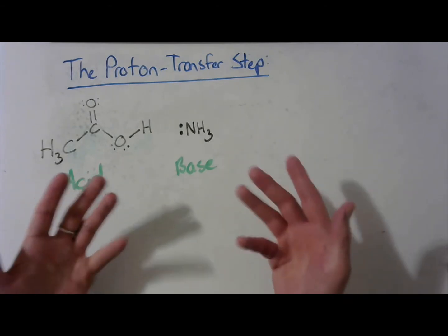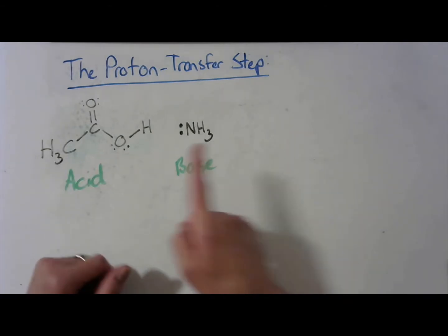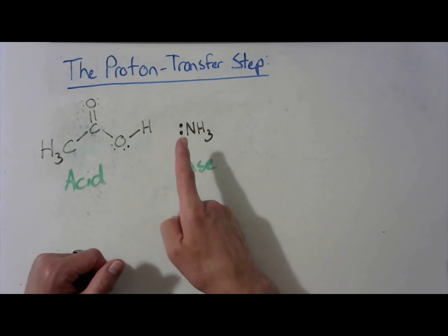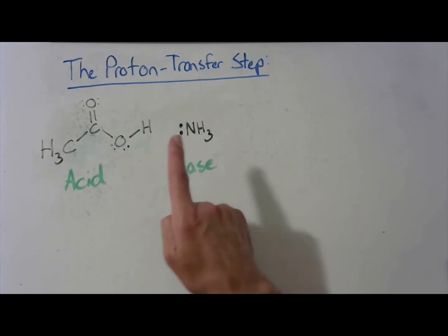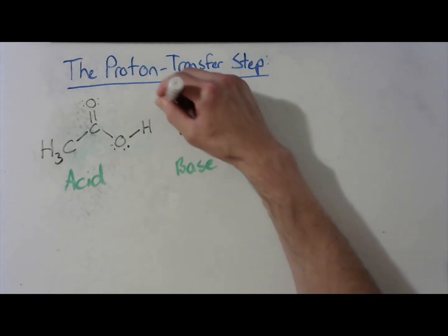Okay, so the way that we show this proton transfer, we're going to show this pair of electrons here on the nitrogen becoming a covalent bond to the hydrogen. And the way that we do that is by drawing a curved arrow from that lone pair specifically over to the hydrogen. Like so.